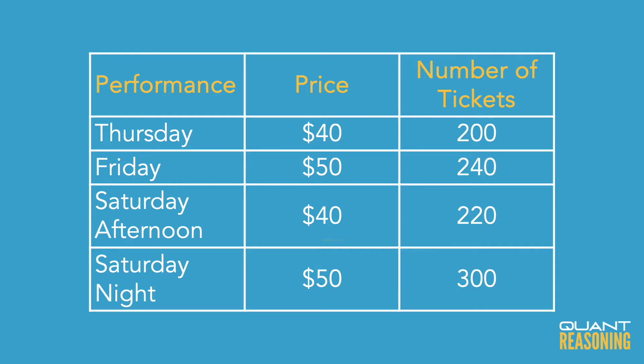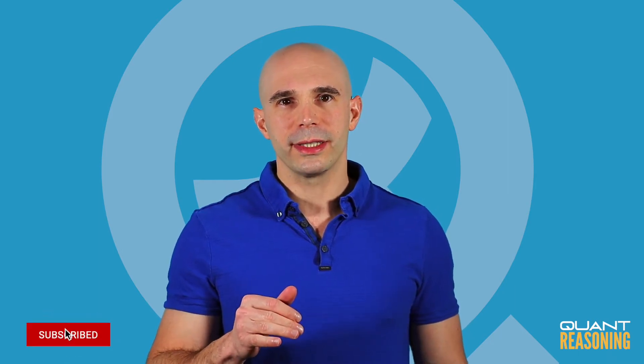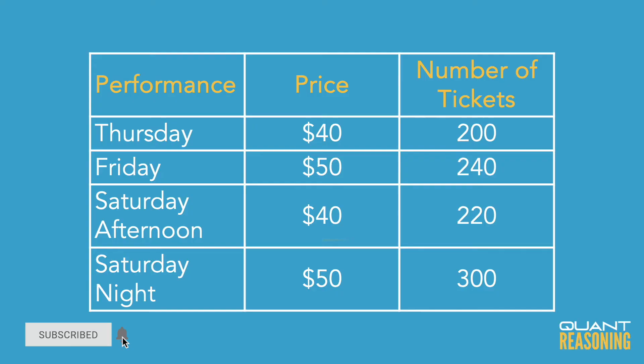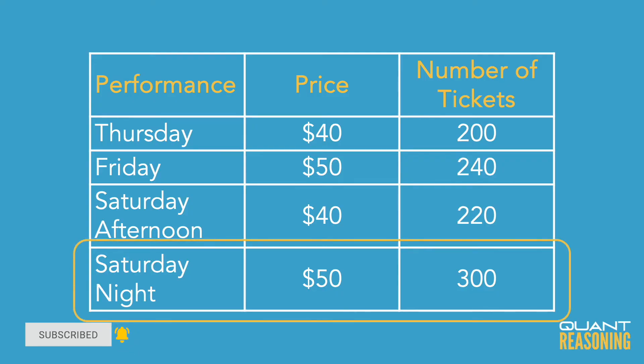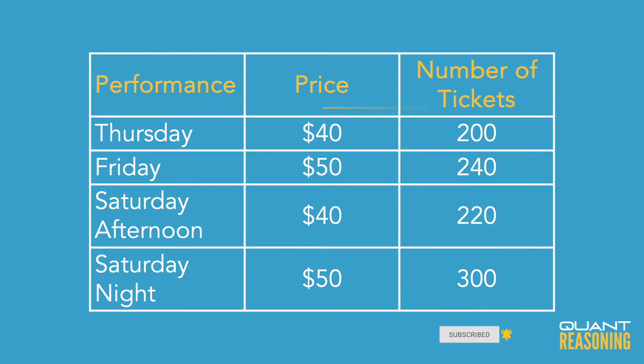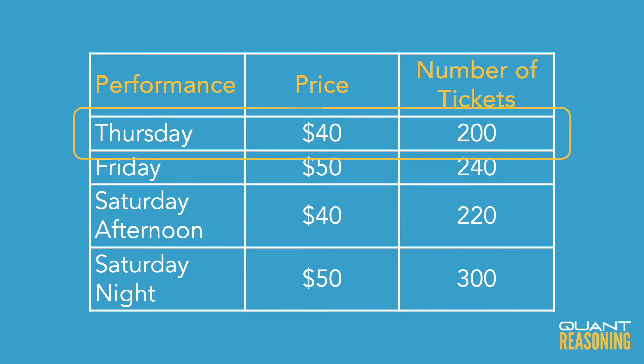This question wants us to find the product of each of these rows and then figure out the difference between the biggest of those products and the smallest of those products. But if we glance at these numbers in each of these rows, we might notice that one row has the biggest number on the left and the right, and one row has the smallest of the numbers on the left and the right.